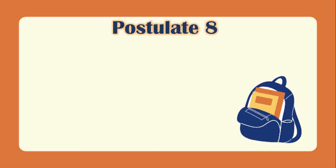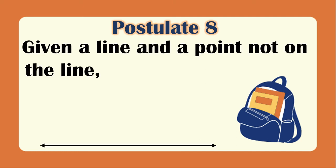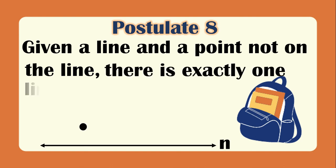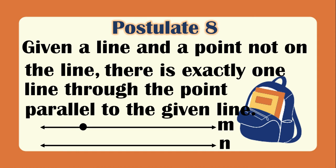Postulate 8: given a line and a point not on the line, there is exactly one line through the point parallel to the given line. So we draw a line through the point and line M is parallel to line N.